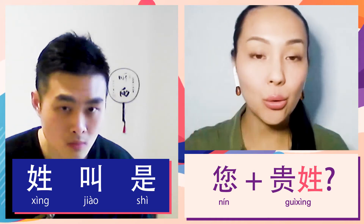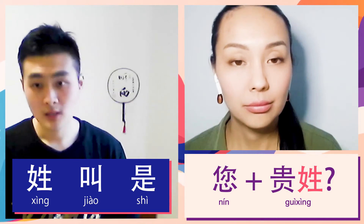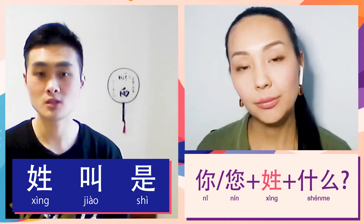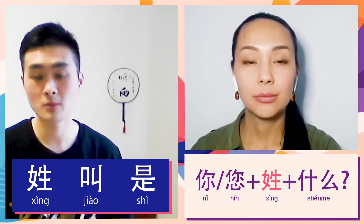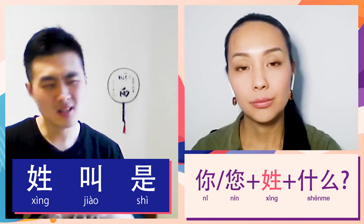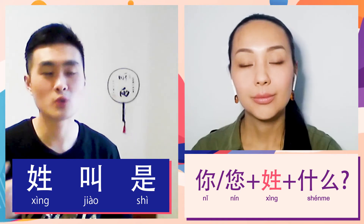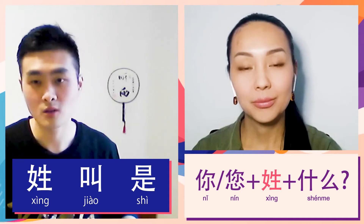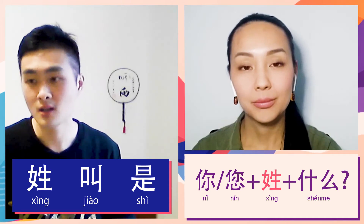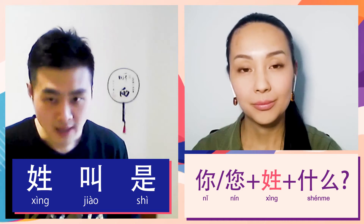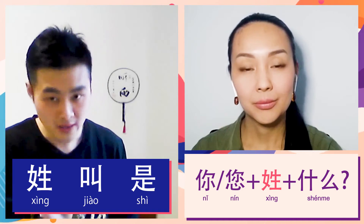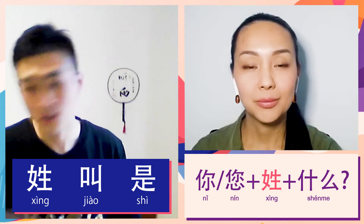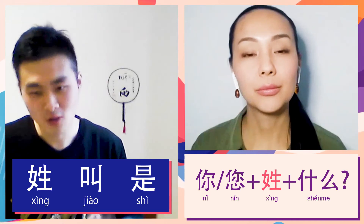Can I say 您贵姓 to a colleague? Yes, you can. And the simplest way to ask somebody's surname is 你姓什么. It's a simple way — everyone can ask this question, but it's not so polite. For example, if you are colleagues, classmates, or friends of the same age, you can just ask it casually. You can also use 您 — exchanging 你 for 您 makes it a little more polite, but the most polite form uses 您贵姓.